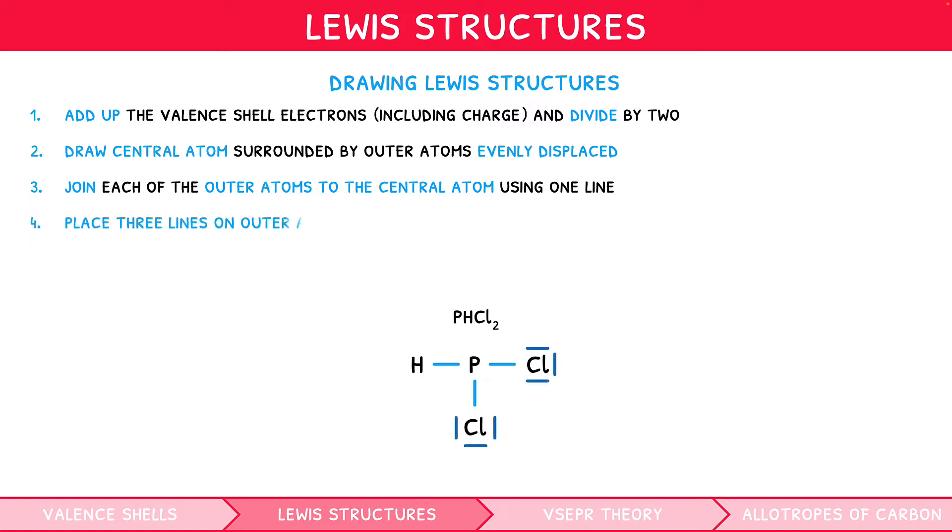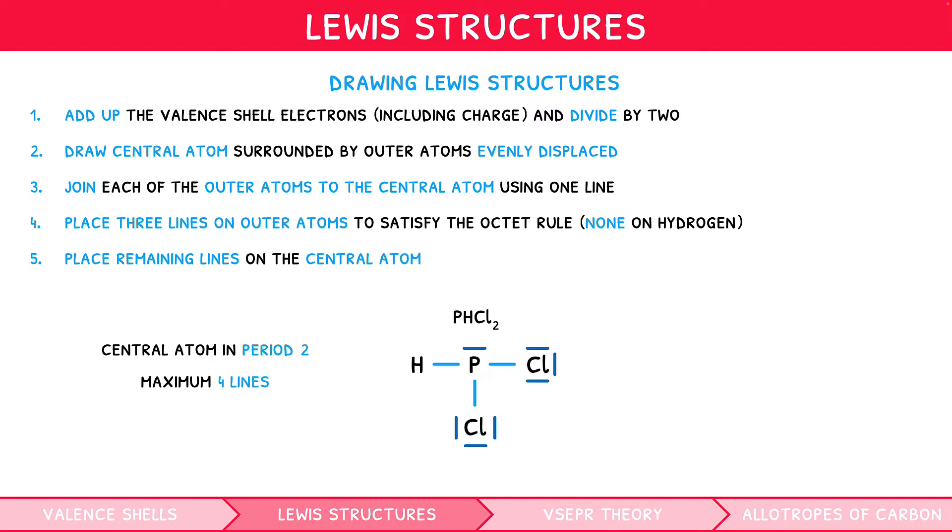Place 3 lines on the outer atoms to satisfy their octets. Remember, hydrogen can only have 2 electrons, which it has from its bond, so you do not need to place any lines. If present, place any remaining lines on the central atom. As a useful tip, a central atom in period 2 should have a maximum of 4 lines connected, whereas one in period 3 should have a maximum of 9.